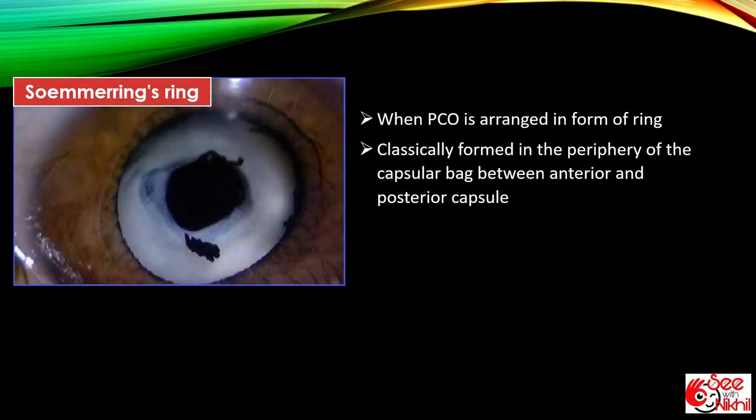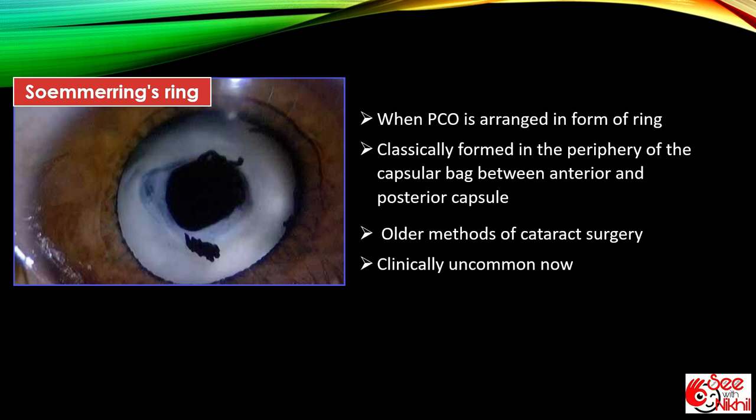Soemmering's ring is PCO in form of ring, classically formed in periphery of capsular bag between anterior and posterior capsule. It was seen with older methods of cataract surgery and is clinically uncommon now.